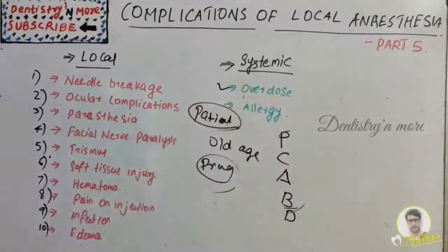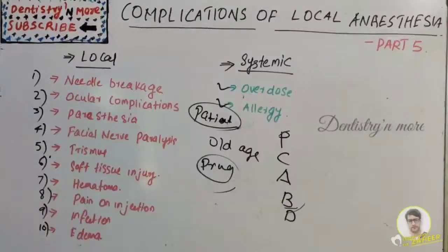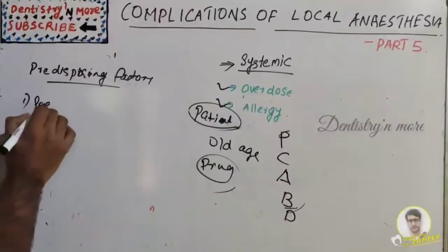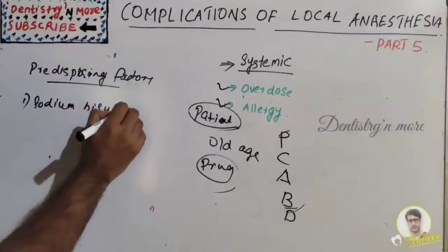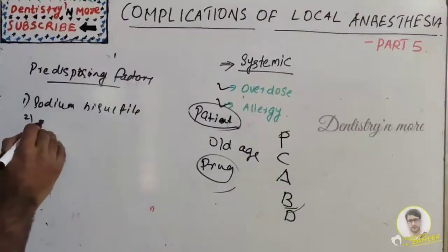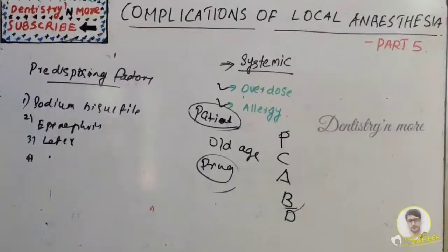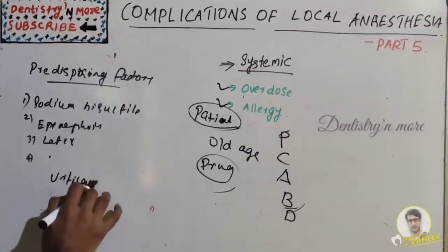The second systemic complication is allergy — a hypersensitive state acquired through exposure to a particular allergen. Allergic reactions range from mild delayed responses occurring up to 48 hours after exposure to immediate life-threatening reactions developing within seconds. Predisposing factors include sodium bisulfate, epinephrine, and latex. Clinical manifestations include urticaria and angioedema.